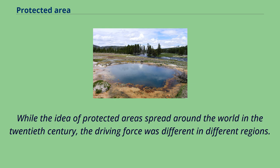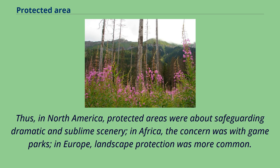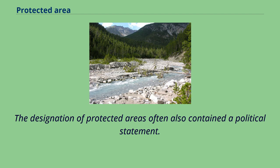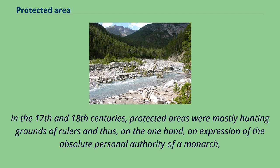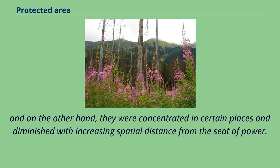While the idea of protected areas spread around the world in the 20th century, the driving force was different in different regions. In North America, protected areas were about safeguarding dramatic and sublime scenery; in Africa, the concern was with game parks; in Europe, landscape protection was more common. The designation of protected areas often contained a political statement. In the 17th and 18th centuries, protected areas were mostly hunting grounds of rulers — an expression of absolute personal authority — and were concentrated near seats of power.